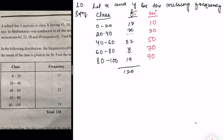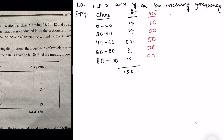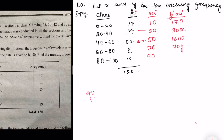Since the mean is given, we use the mean formula. Now calculate fi·xi for each class: 17 × 10 = 170, 30x (i.e., x × 30), 32 × 50 = 1600, 70y (i.e., y × 70), and 90 × 19 = 1710. Now find the summation of fi·xi.